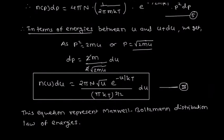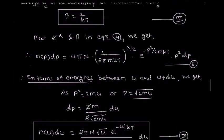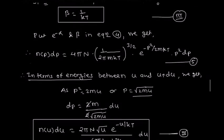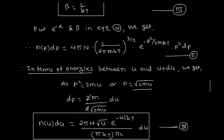Using that relation we can also find another relation in terms of velocity and find the distribution of molecular speed. To summarize: we discussed the Maxwell-Boltzmann distribution law, the constants alpha and beta, and by substituting alpha and beta into the equation we get the Maxwell-Boltzmann distribution law in terms of momentum as well as energies. Thank you.